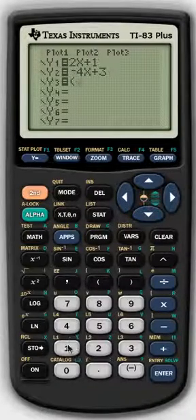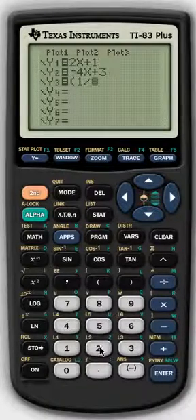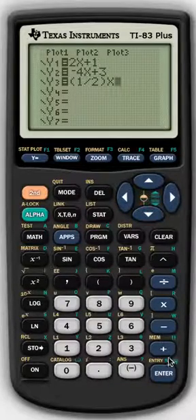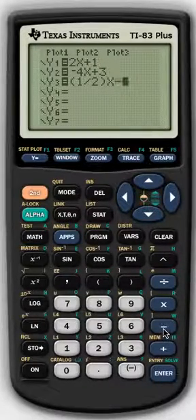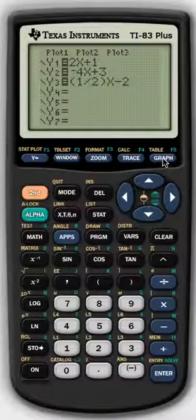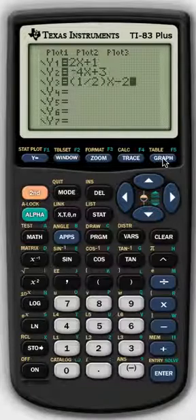I would use open parenthesis, 1 divided by 2, close parenthesis, your x variable, and then plus or minus whatever the y-intercept is. That's just another thing that you could do if your slope is in fraction form.